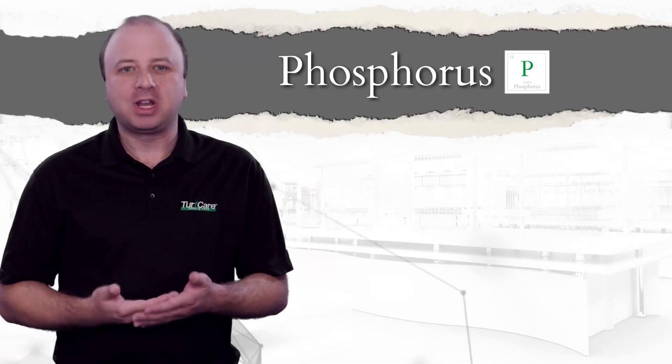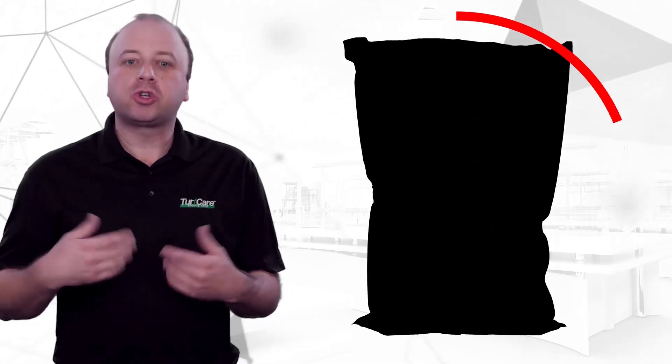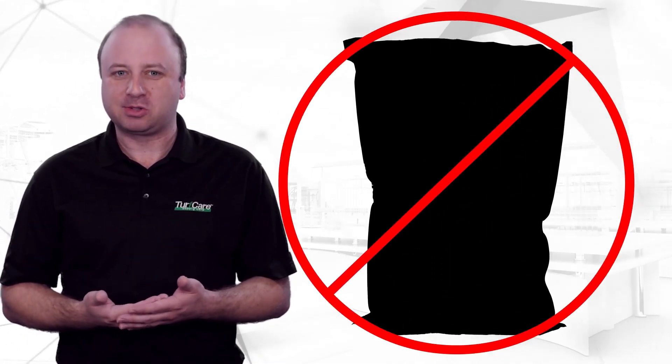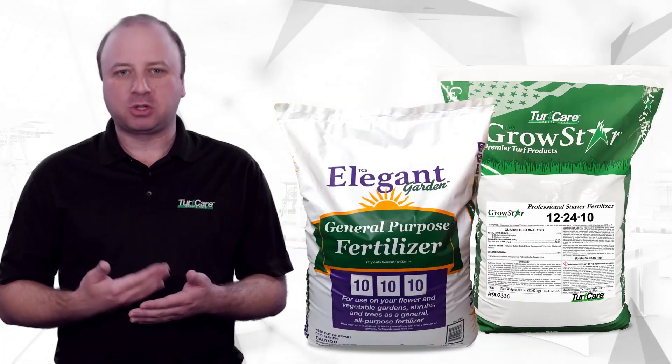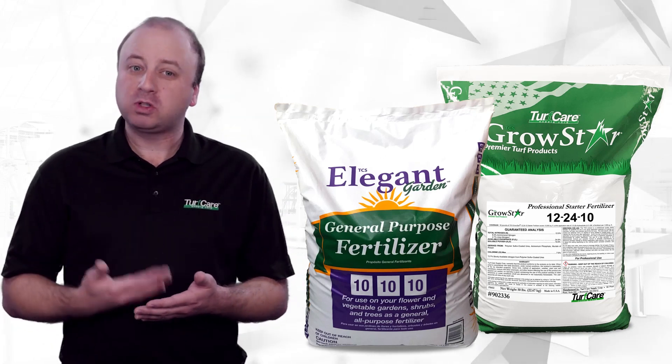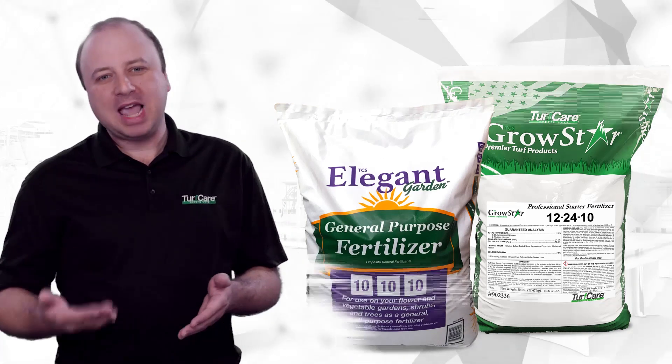The problem of eutrophication has led some states and counties to enforce blackout periods which are certain times of the year when it is against the law to apply specialty fertilizers. For these reasons, phosphorus is usually only found in starter and general purpose fertilizers. Be sure to check your state and county ordinances for rules and regulations regarding when you can and can't apply phosphorus, as well as nitrogen, and how much you can apply annually.